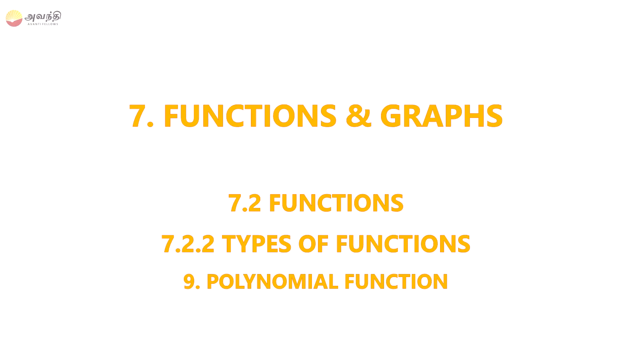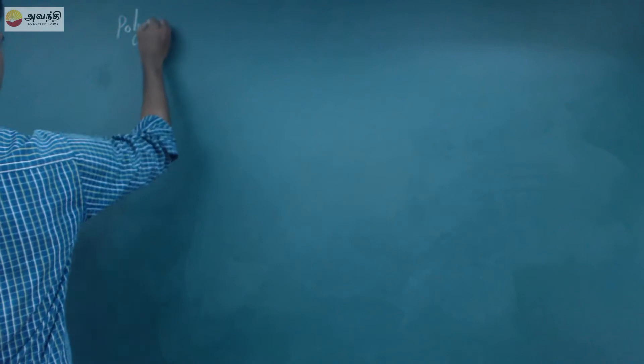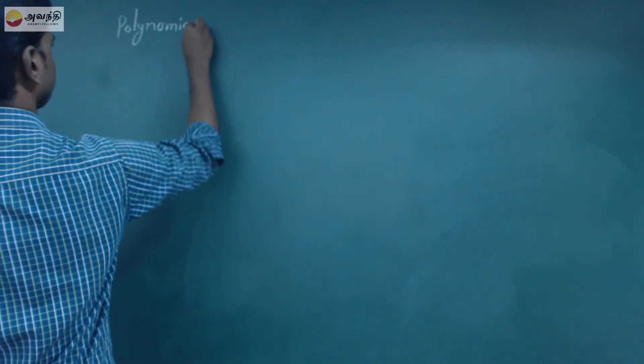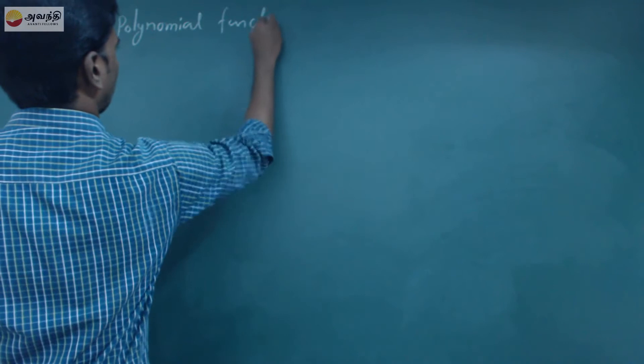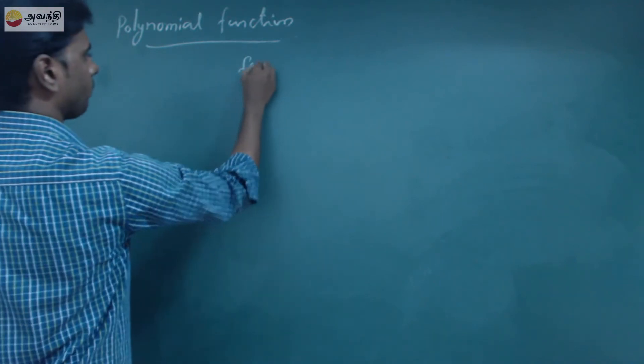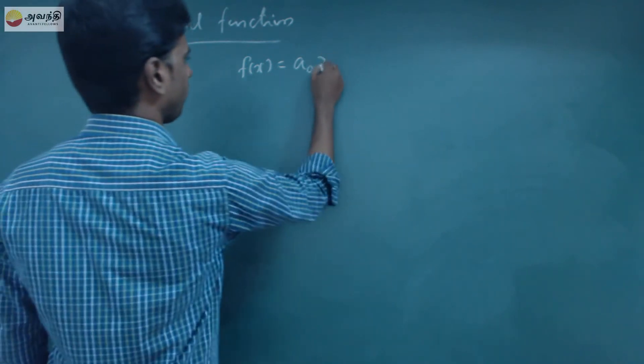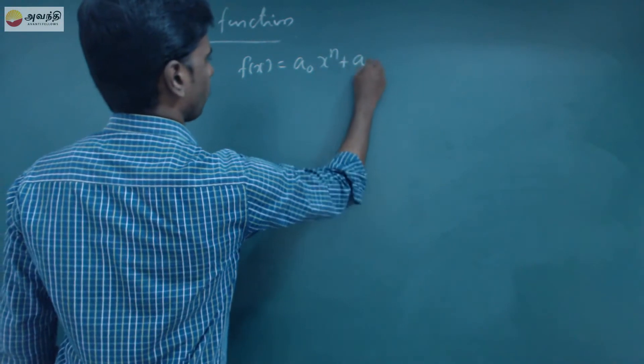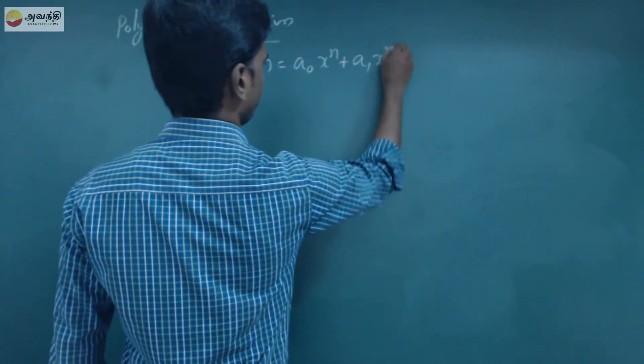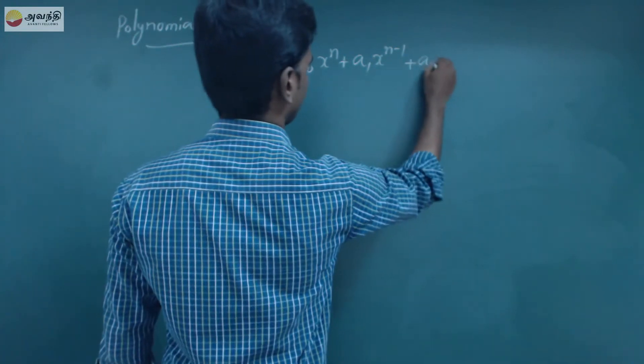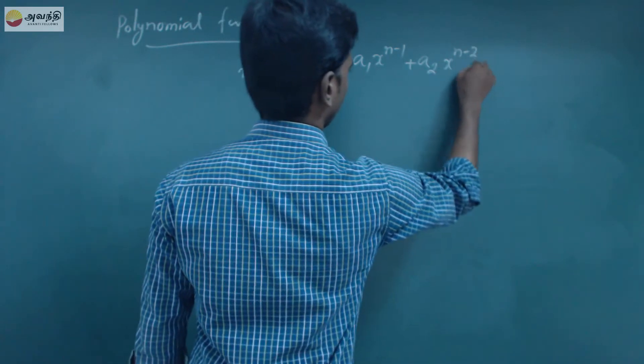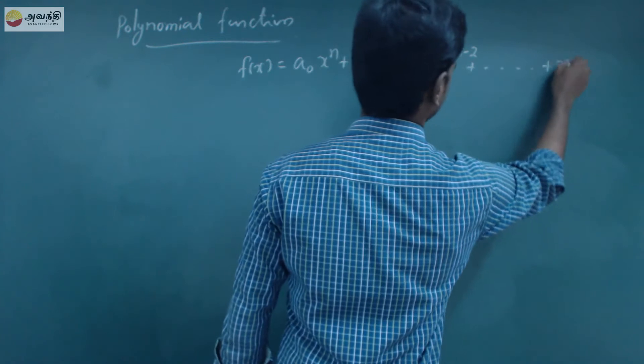What are you doing here? That is, f of x is equal to a naught constant, x power n, a1 is constant, x power n minus 1.